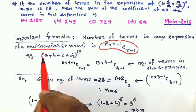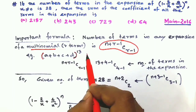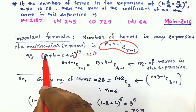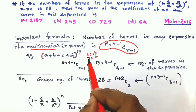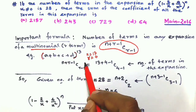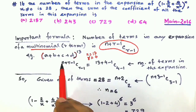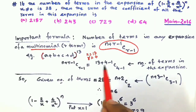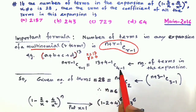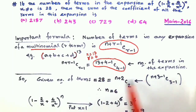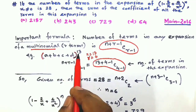As an example, take (a + b + c + d)¹³. Here n equals 13 and r equals 4, since there are 4 terms. So n+r-1 C r-1 will be 13+4-1 C 4-1, which is 16 C 3. This gives us the number of terms in the expansion of (a+b+c+d)¹³.